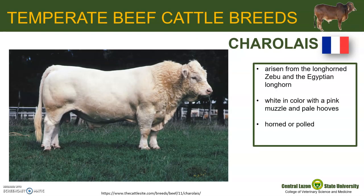Now let us discuss some of the most popular breeds of the temperate beef cattle, or Bos taurus. The Charolais originated from France. They are white in color with a pink muzzle and pale hooves. Charolais is a naturally horned beef animal, but through a breeding-up program where naturally polled breeds were sometimes used as foundation animals, polled Charolais have emerged as an important part of this breed.